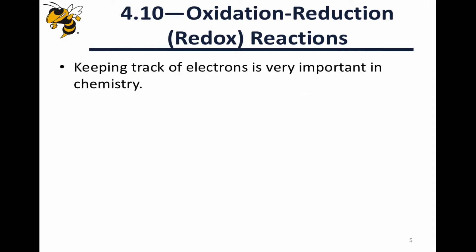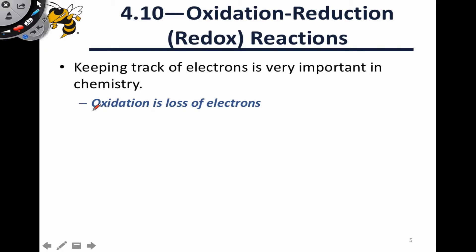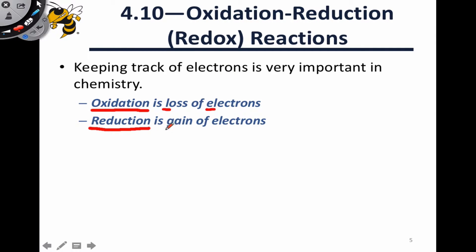In the context of these reactions in which electron transfer occurs, keeping track of electrons is critical. We want to keep track of how many electrons a species has before it reacts and after it reacts to determine whether it gained or lost electrons. In these electron transfer processes, there are two types of half-reactions. The first is called oxidation — the loss of electrons from a species. The second is called reduction — the gain of electrons.